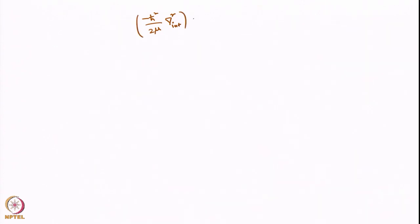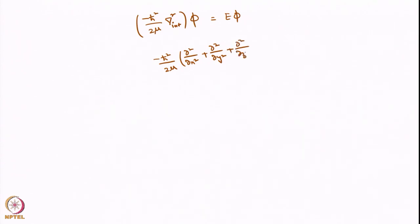The corresponding Schrödinger equation is: minus ℏ²/2μ (∂²/∂x² + ∂²/∂y² + ∂²/∂z²) acting on the wave function φ equals E·φ. This is the equation we need to solve.